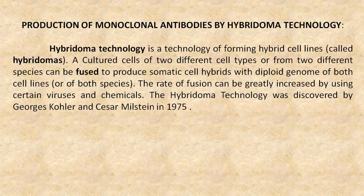Hybridoma Technology is a technology of forming hybrid cell lines. Cultured cells of two different cell types or from two different species can be fused to produce somatic cell hybrids with diploid genomes of both cell lines. The rate of fusion can be greatly increased by using certain viruses and chemicals. The hybridoma technology was discovered by George Kohler and Cesar Milstein in 1975.